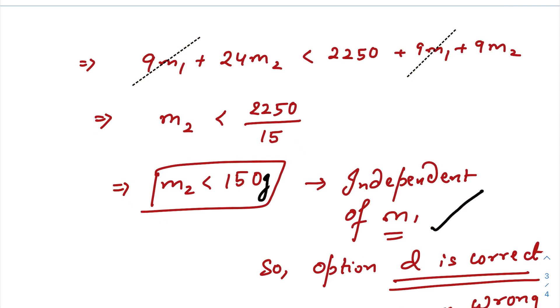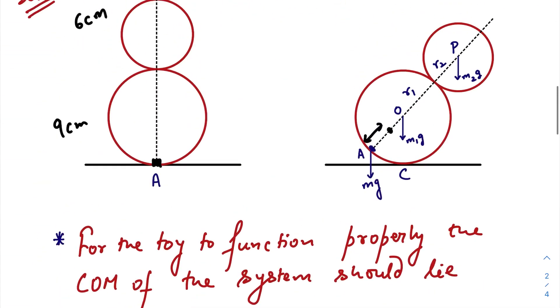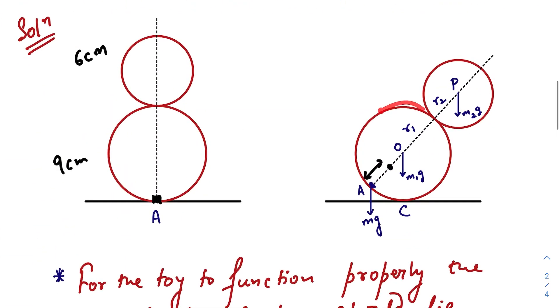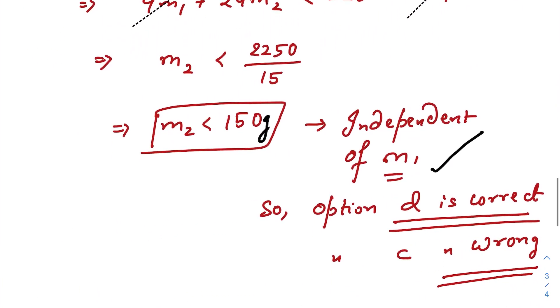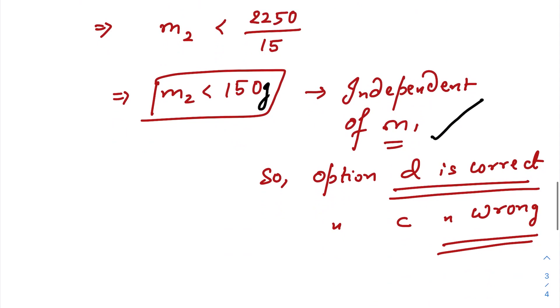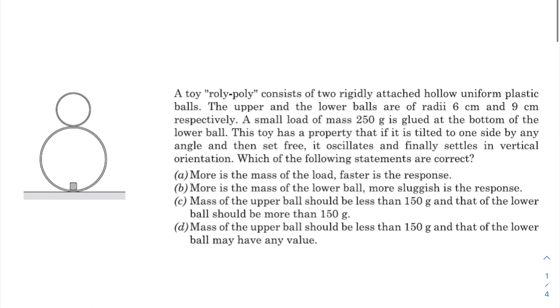Now as you can see, it is independent of m1. So no matter what be the value of the mass of this bigger sphere, it won't hamper the functioning of the toy because the force or the torque will be zero with respect to the pivot point, since this weight is passing through this pivot point only. So torque will be zero. So doesn't matter whatever the mass of m1 is. So option D is correct and C is wrong. Let us check once again: option D says mass of the upper ball should be less than 150 g, yes, and that of the lower ball may have any value.